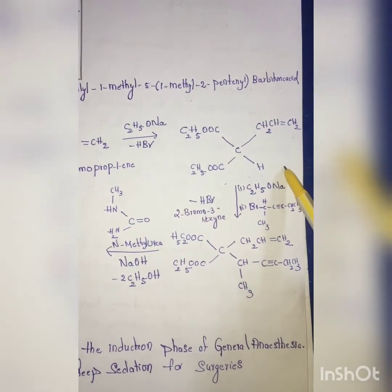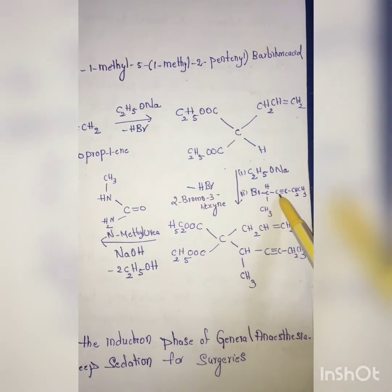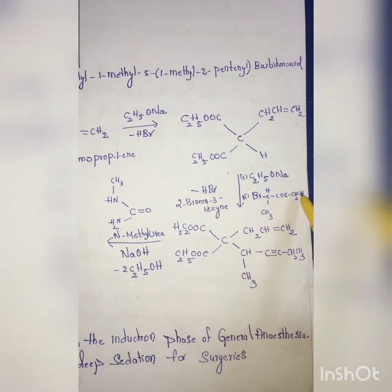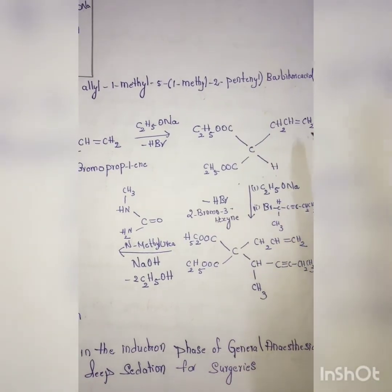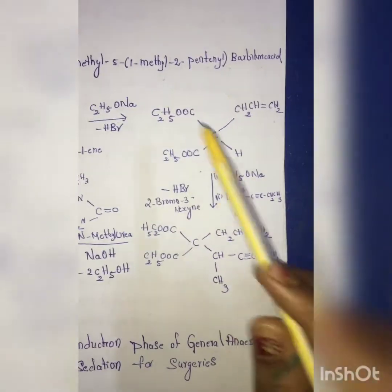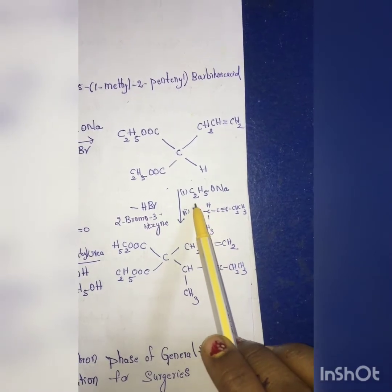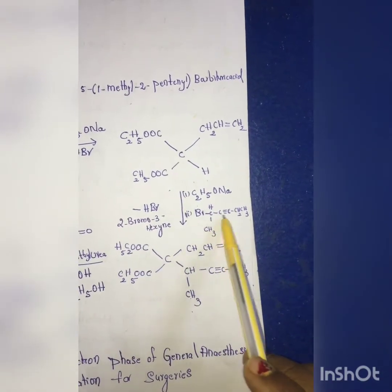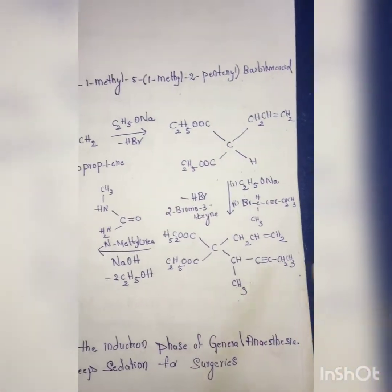Now this intermediate again upon the reaction in the presence of sodium ethoxide with 2-bromo-3-hexyne, so upon reaction with 2-bromo-3-hexyne, everything will be same. Now in this H place I am going to add this. So the CH CH3 CH2 CH3, the second substitution will be now complete.